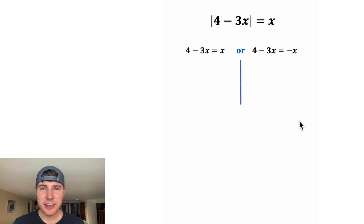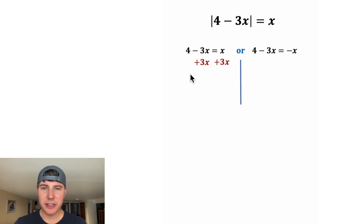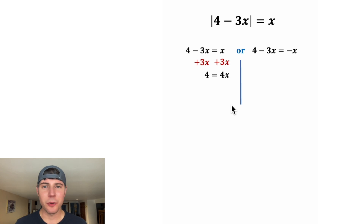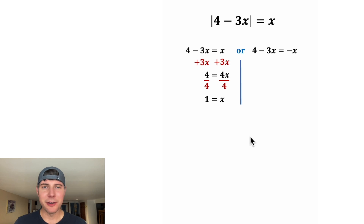Now we can just solve each of these independently. Let's add 3x to both sides. So on the left-hand side we just have 4, and on the right-hand side we have x plus 3x, which is 4x. After we divide both sides by 4, we get x is equal to 1.